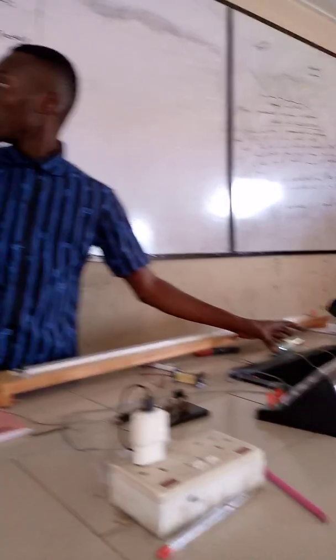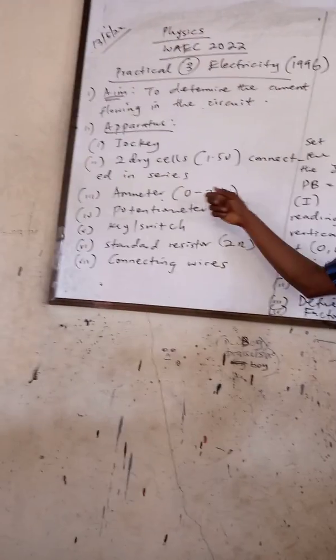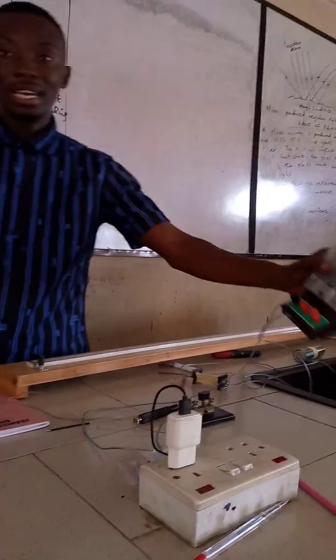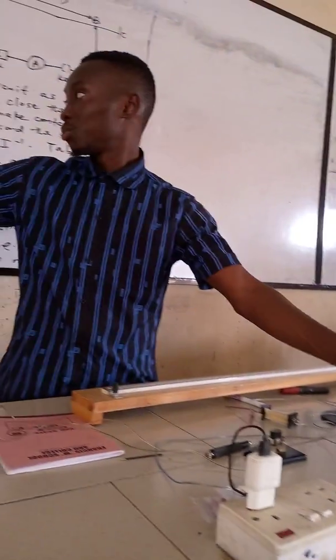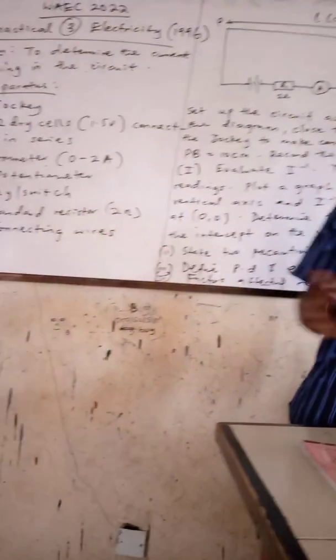Then we also have the ammeter. Our ammeter should be rated between 0 to 2 amperes. Of course this ammeter here is rated 0 to 3. Of course it can take the readings as long as it is between 0 to 2 or 0 to 3.